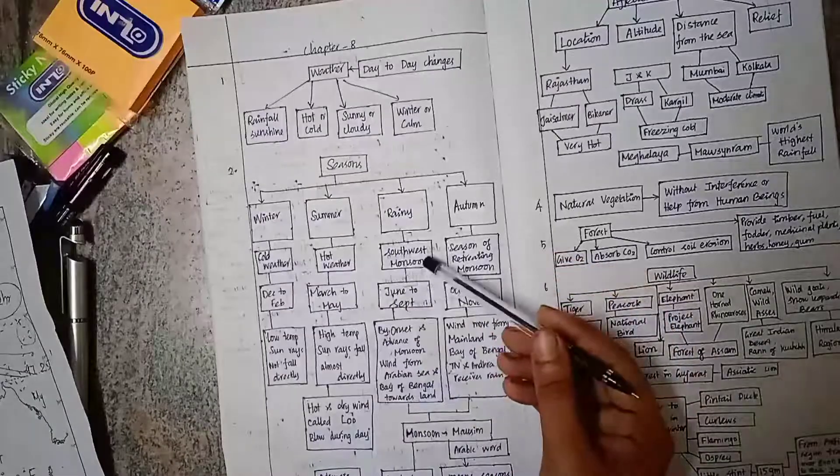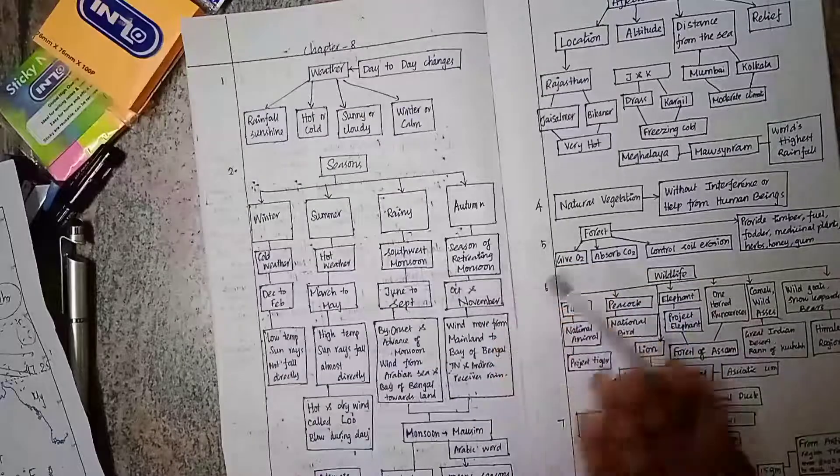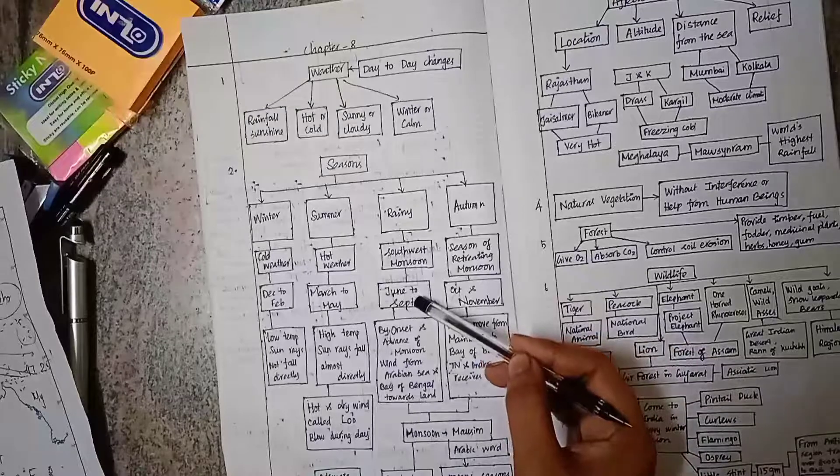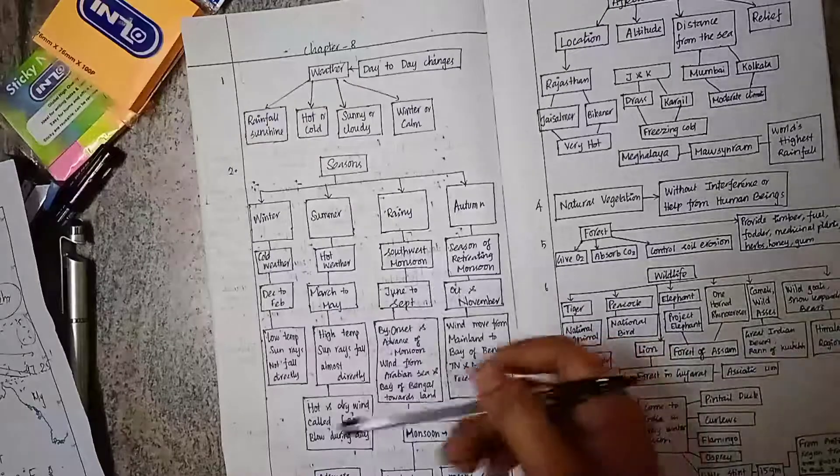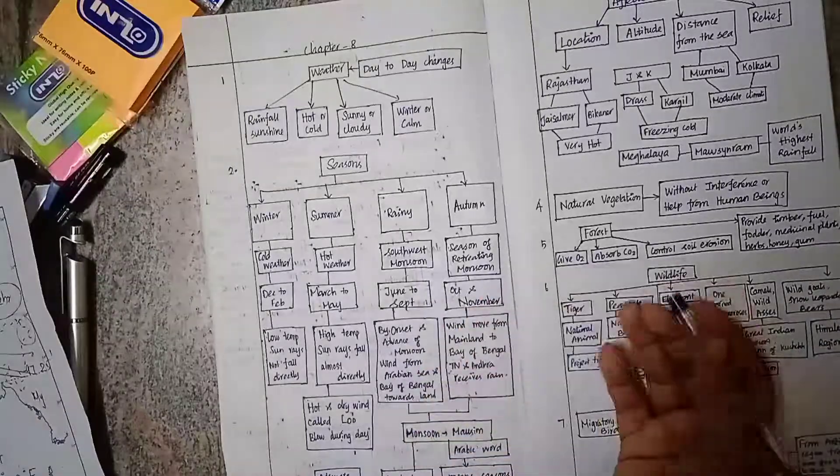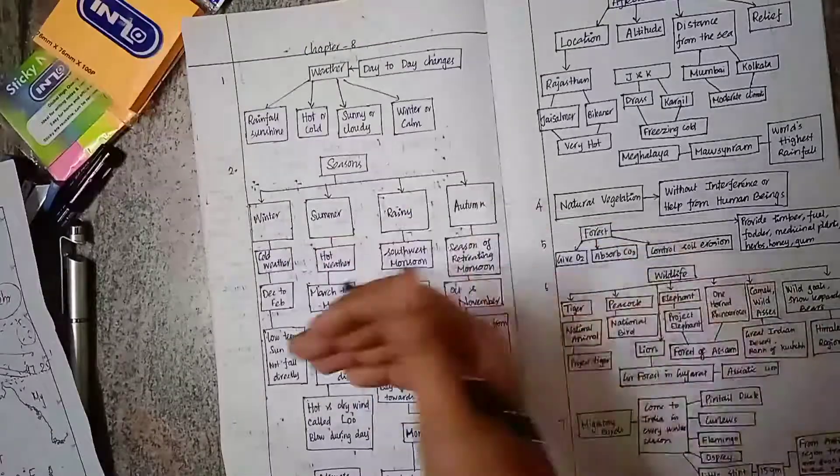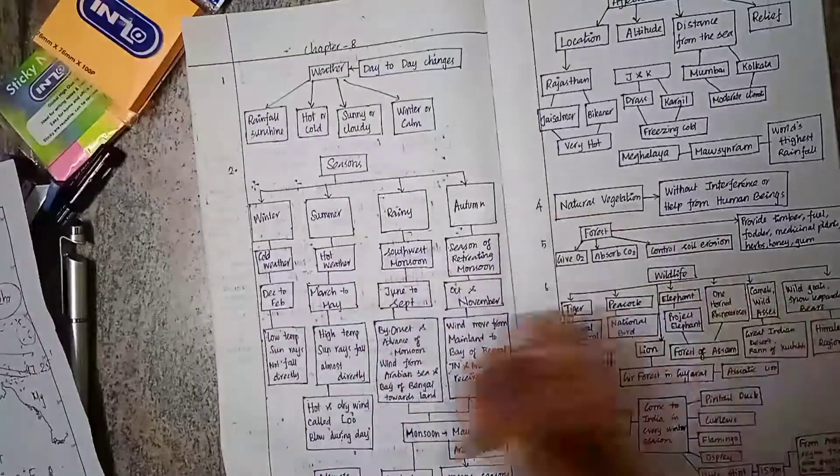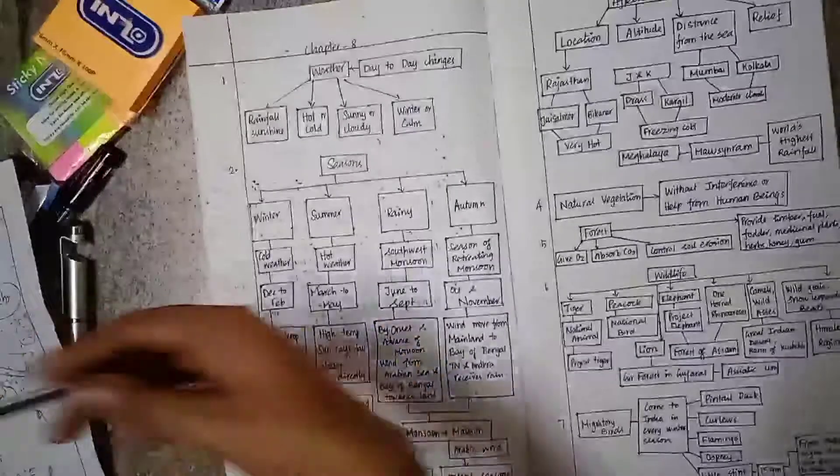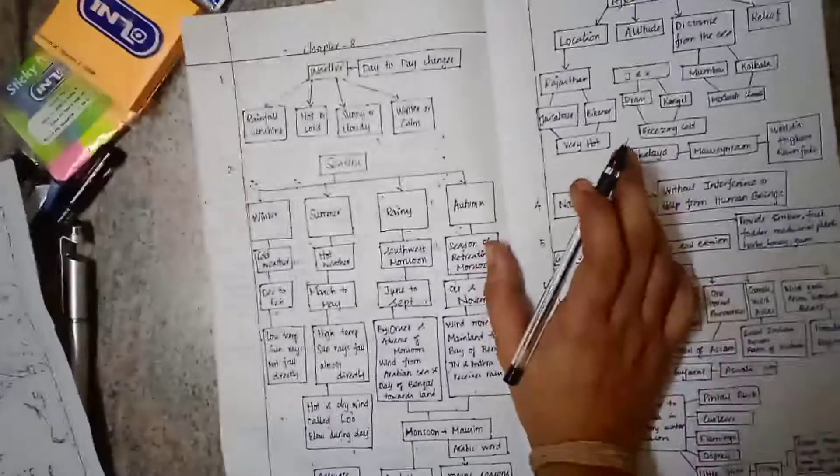Then we have rainy season during the southwest monsoon. By this monsoon only, we are gaining rainfall. This period is from June to September by the onset and advancement of the monsoon. Winds from the Arabian Sea and Bay of Bengal flow towards the land, and this wind coming to the land creates rainfall.